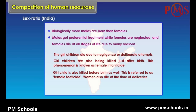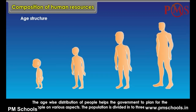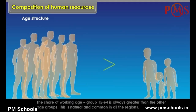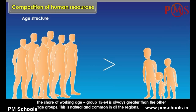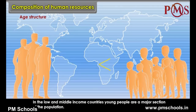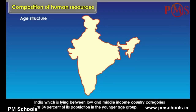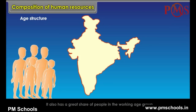Age Structure: The age-wise distribution of people helps the government to plan for people on various aspects. The population is divided into three age groups: 0 to 14 years, 15 to 64 years, and 65 years and above. The share of the working age group (15 to 64) is always greater. In high and middle income countries, a high proportion are in the working age group. India, lying between low and middle income categories, has 34% of its population in the younger age group.